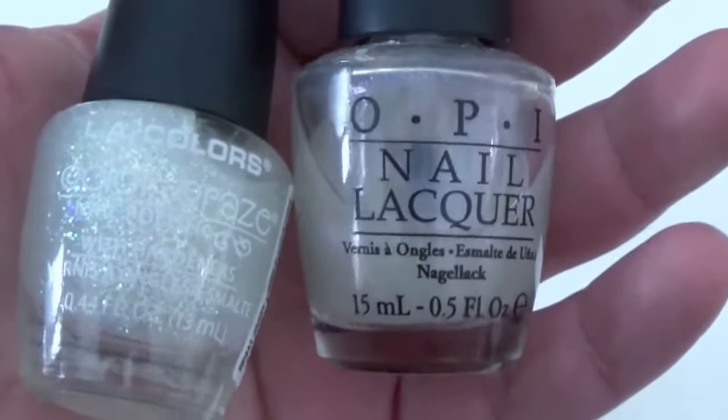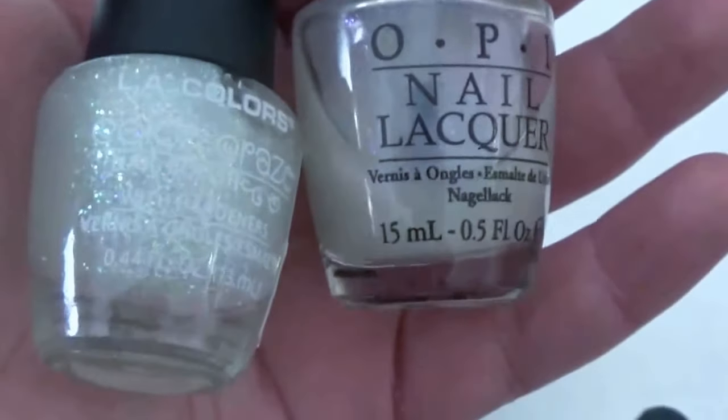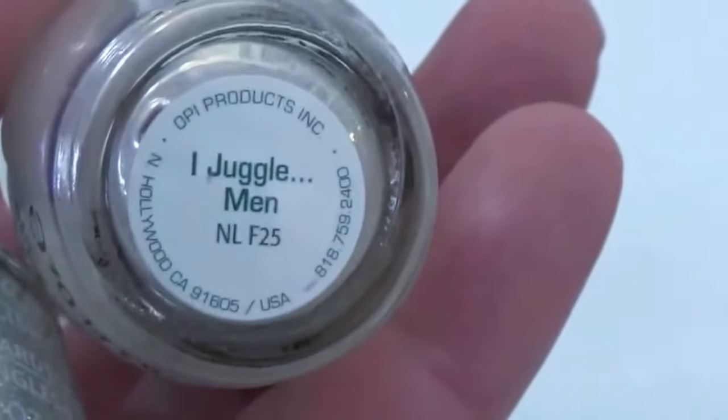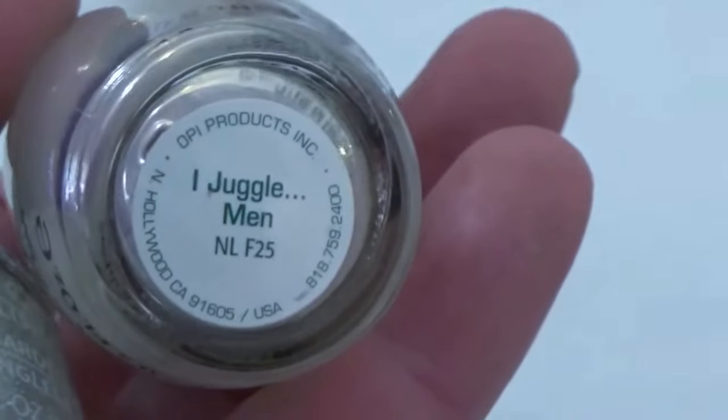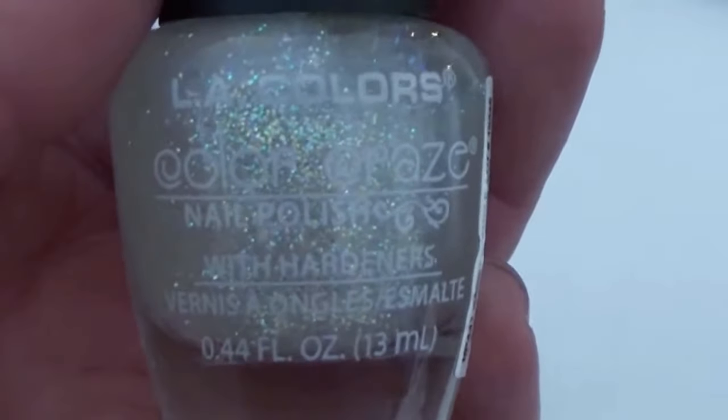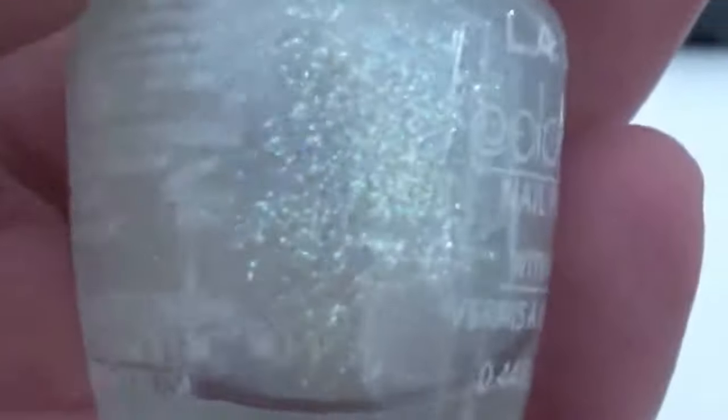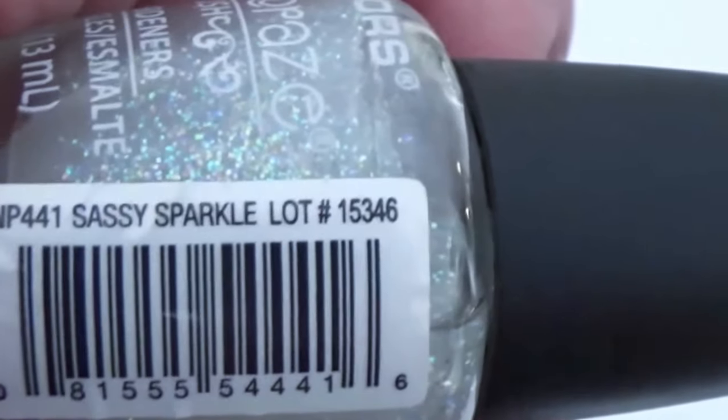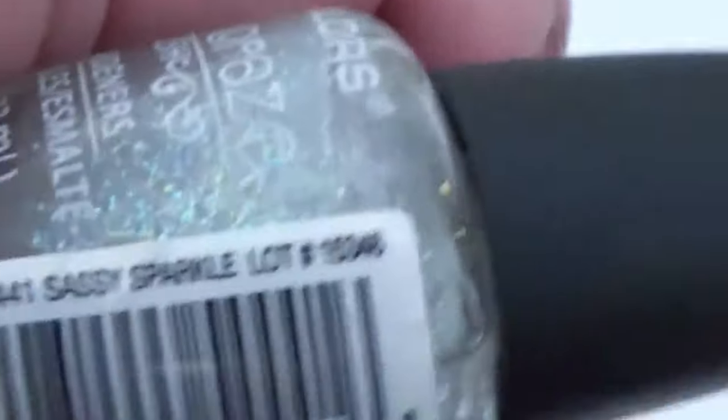So because this is inspired by Simply Nailogical, I'm going to do a holo glossy taco, as she would say. I hope I'm saying this right. And these are the two that I found. Now this is an OPI. It has a little bit of that holo kind of glitter on it, but still with a clear coat. And it is called I Juggle Men. Okay then. But honestly, I think this is the one I'm going to go for. This is LA Colors. And it has the more bang for your buck. It still has the clear glossy taco, or glossy top coat, but it definitely has a lot more holo glitter in it. And does it have a name? Okay, so the name on it is Sassy Sparkle Lot.